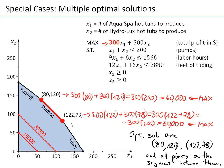This is an example in which we have multiple optimal solutions — more than one optimal solution. Notice that corner points are still the first candidates for optimal solutions. But when you have more than one corner point that is optimal, we call this case multiple optimal solutions or alternate optimal solutions. Notice also that all points in between are optimal solutions. In practice, we might be interested in integer points, but in mathematical terms, there is an infinite number of points.